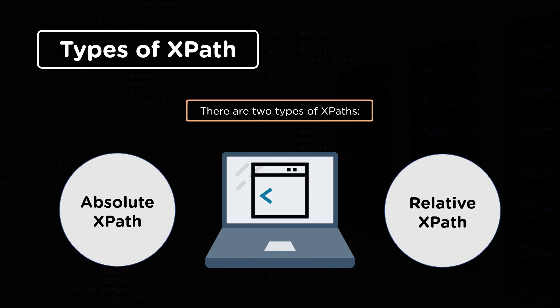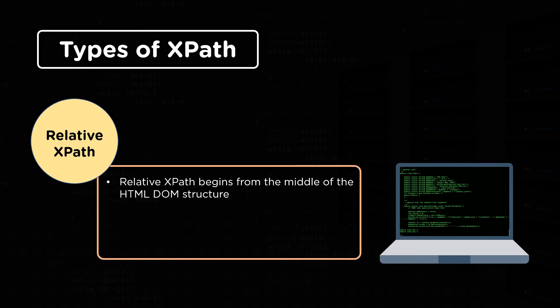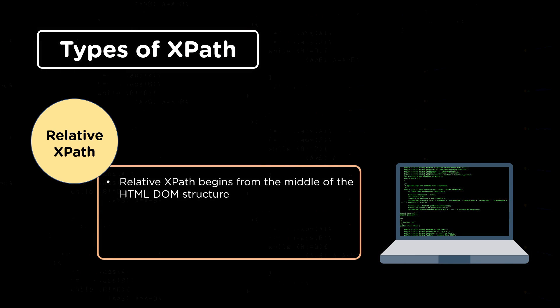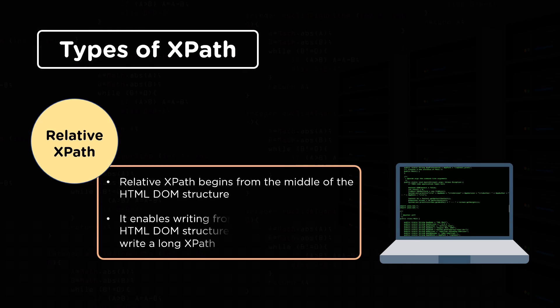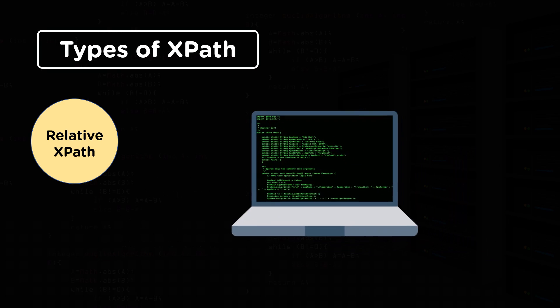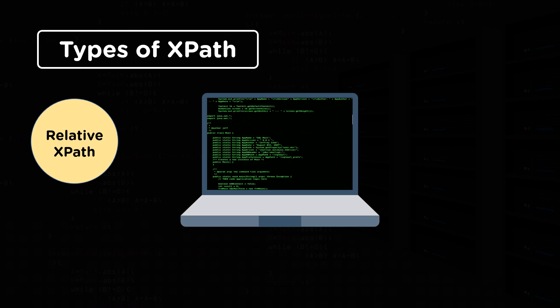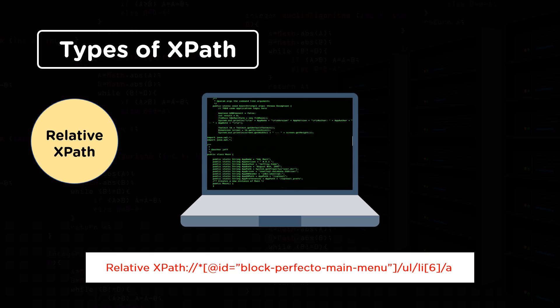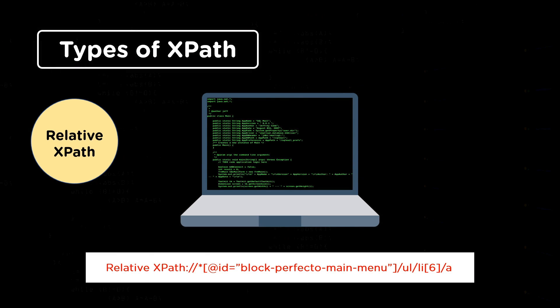Now let's see the Relative XPath. In the case of Relative XPath, the path begins from the middle of the HTML DOM structure. It uses a double forward slash, which states that the element can be searched anywhere on the webpage. Relative XPath enables you to write from the middle of the HTML DOM structure without any need to write a long XPath. The syntax of Relative XPath looks like this. A relative path needs to be combined with another path to access a file, and the file must exist on the same server as the HTML file, with the path relative to the directory of the HTML file.